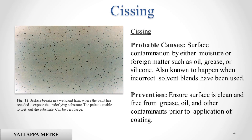Sissing. Probable causes: surface contamination by either moisture or foreign matter such as oil, grease, or silicone. Also known to happen when incorrect solvent blends have been used. Prevention: ensure surface is clean and free from grease, oil, and other contaminants prior to application of coating.